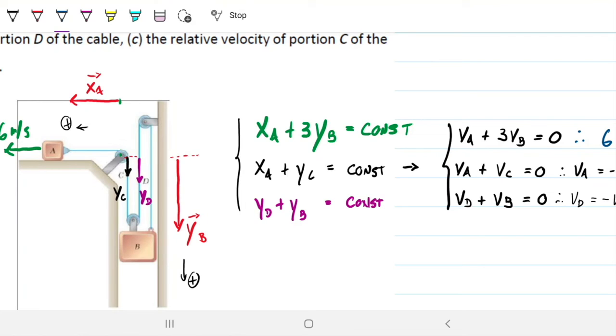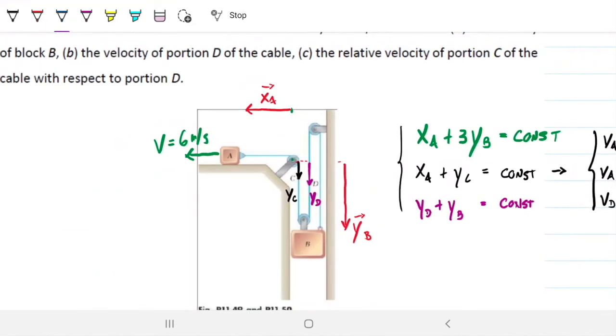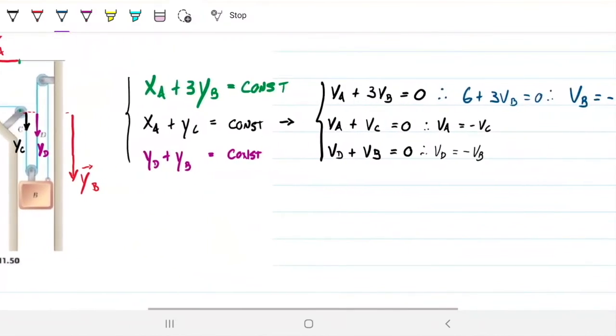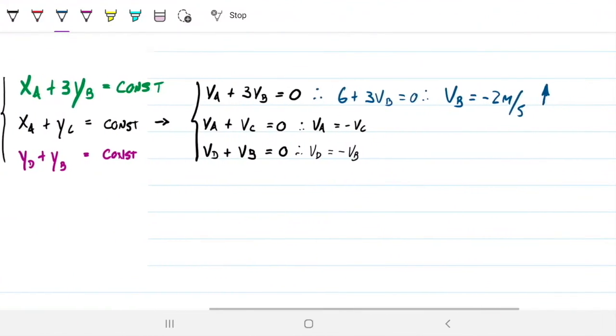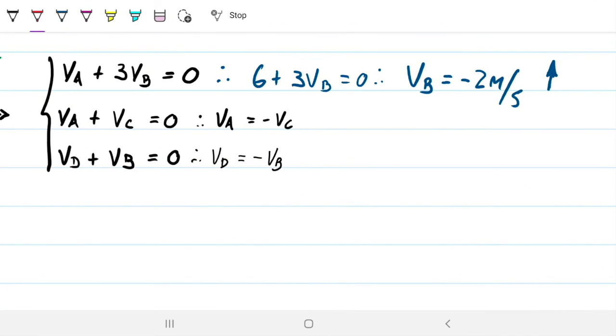What else? Next part of the question is, what is the velocity of portion D of the cable? So portion D. D is just negative B, right? Therefore, we can zoom in here. So D is just negative B. So that's just going to be two metres per second. So that's moving downwards.